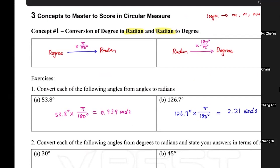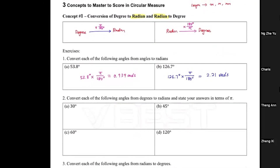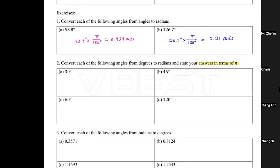Now I want you to memorize something for the next part. Convert these angles to radians and leave your answers in terms of π — do not convert to decimals: 45°, 30°, 60°, 120°, 90°, 180°, 270°, and 360°. Leave all answers in terms of π.